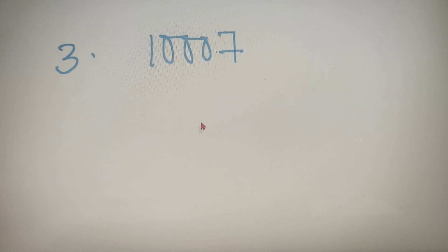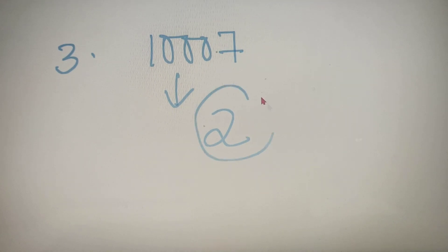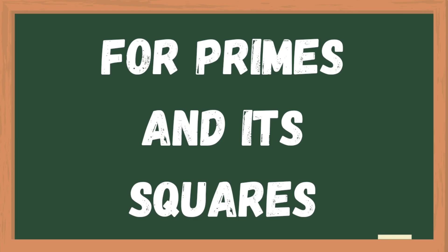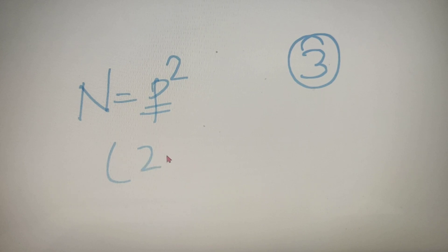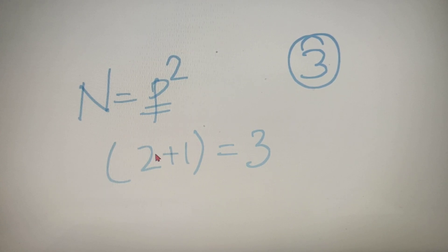For our third example, we have to calculate the number of factors of 1007. Now 1007 is a prime number, so the number of factors of a prime number is directly equal to 2. Also, the number of factors for the square of a prime is always equal to 3, because if n equals p squared where p is prime, then the number of factors by the formula is 2 plus 1, which equals 3. So a prime number has 2 factors, and the square of a prime has 3 factors.